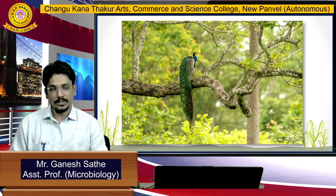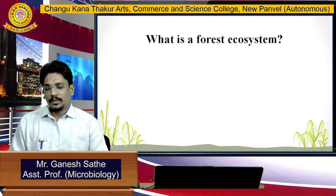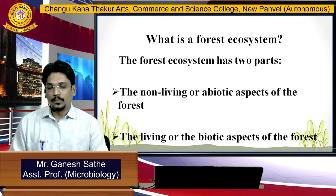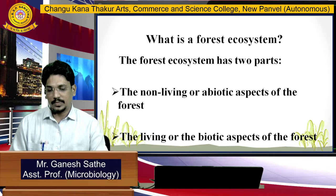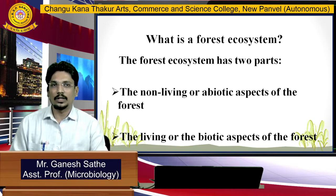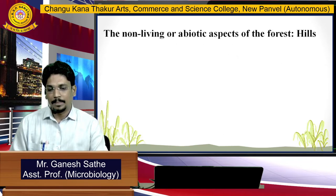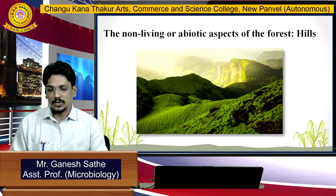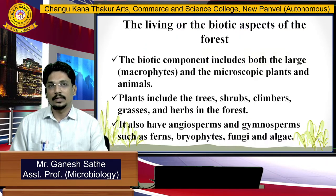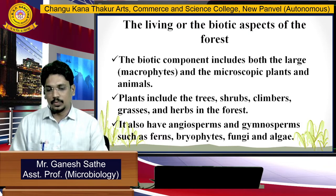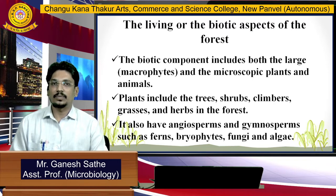The forest ecosystem has two parts: a living part and a non-living part. The non-living part is also called the abiotic part or abiotic factors. Non-living parts include land features such as hills, mountains, and plain areas. Biotic factors include macro plants and micro plants.